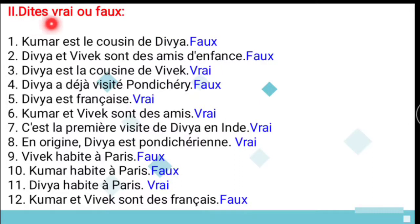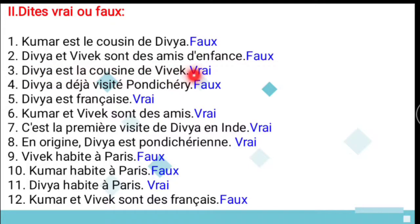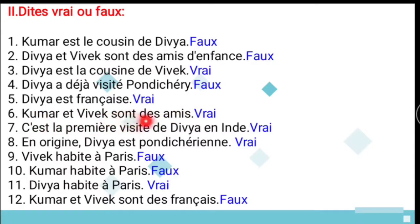Now let us move to the second content: 'vrai ou faux' — true or false. Statement 1: Kumar is Divya's cousin — False, Vivek is Divya's cousin. Statement 2: Divya and Vivek are childhood friends — False, Kumar and Vivek are. Statement 3: Divya is Vivek's cousin — True. Statement 4: Divya has already visited Pondicherry — False, this is her first visit. Statement 5: Divya is French — True.